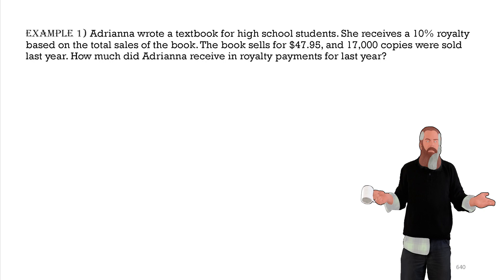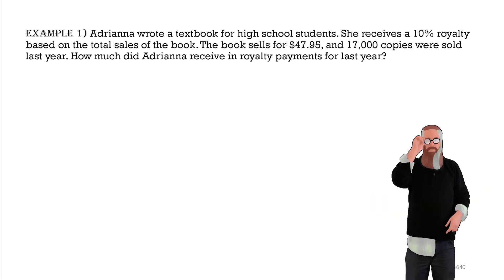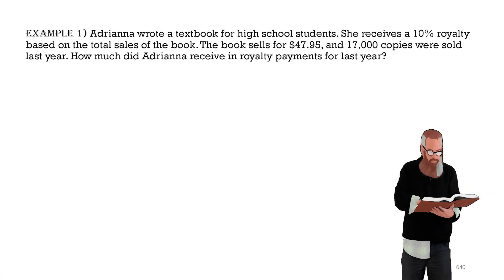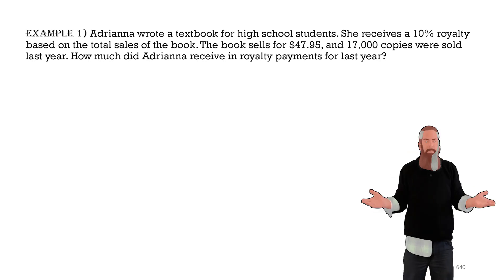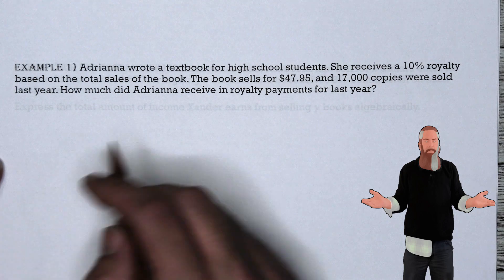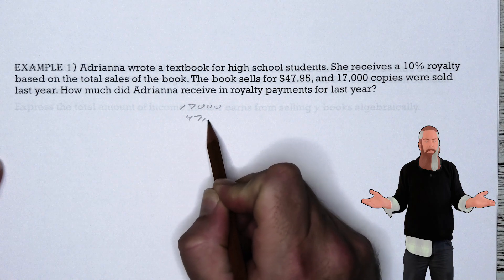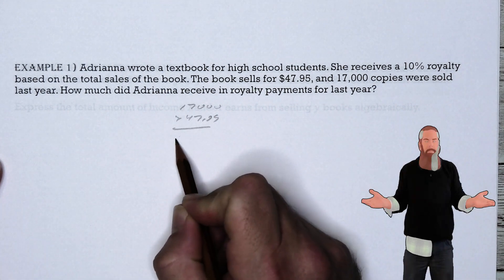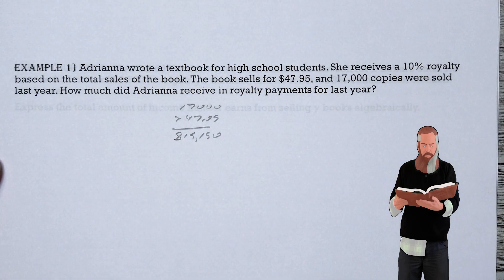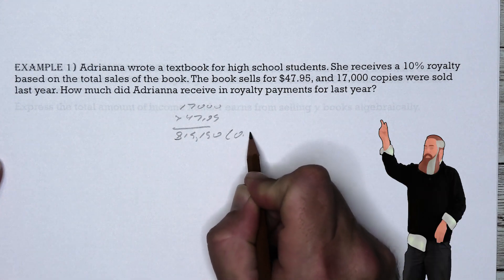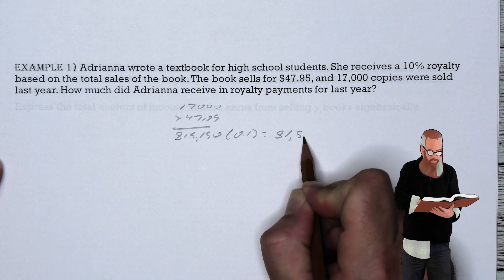Adriana wrote a textbook for high school students. She receives a 10% royalty based on total book sales. The book sells for $47.95 and 17,000 copies were sold last year. How much did Adriana receive? 17,000 × $47.95 = $815,150 in total sales. She receives 10% (0.1) of that, so she earned $81,515 in royalty payments.